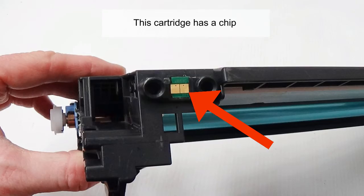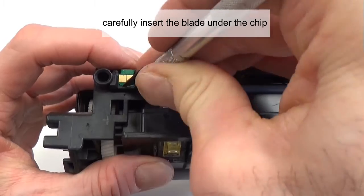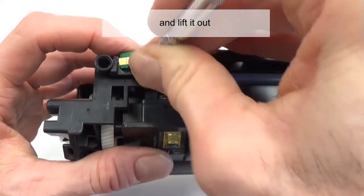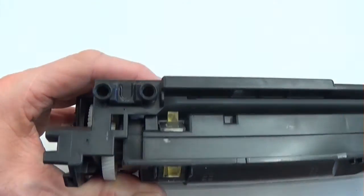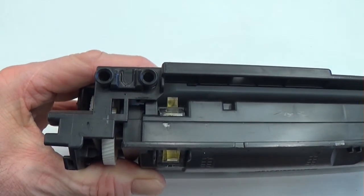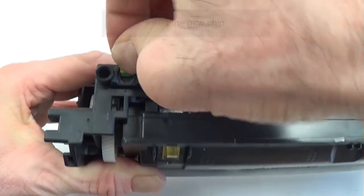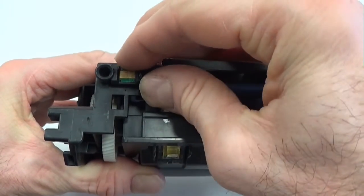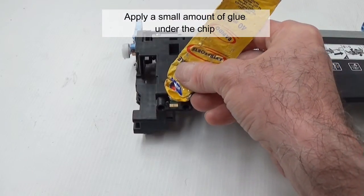This cartridge has a chip. It has to be replaced every time you refill the cartridge. Using a small blade, carefully insert the blade under the chip and lift it out. Insert the new chip. Apply a small amount of glue under the chip.